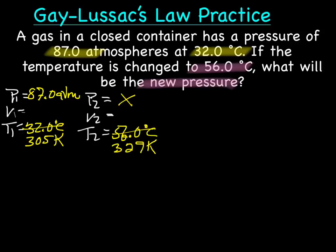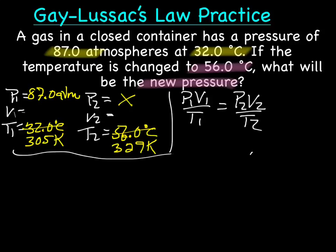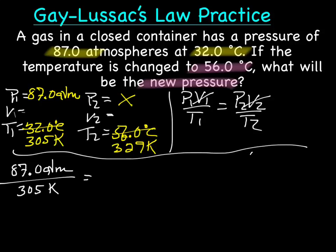Let's put this in the formula. P1 times V1 over T1 equals P2 times V2 over T2. And we get to ignore the Vs this time. So we're going to have 87 atm over 305 Kelvin equals, we don't know what, divided by 329K.